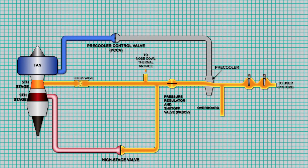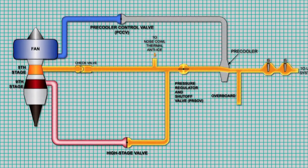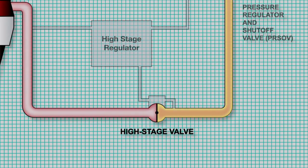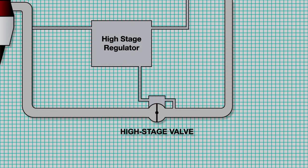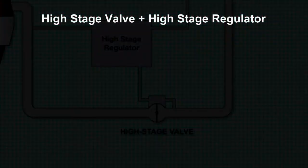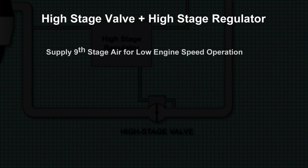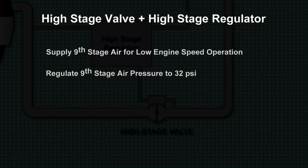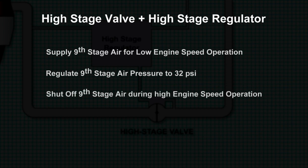The system uses either 9th stage air or 5th stage air during different phases of operation. The flow of 9th stage air is controlled by the high stage valve and the high stage regulator, or HSR. Together, the HSR and HSV control 9th stage air to supply air for low engine speed operation, regulate the pressure to 32 PSI, shut off 9th stage air during high engine speed operation, and prevent reverse flow into the 9th stage.